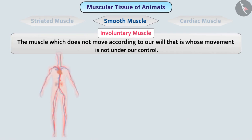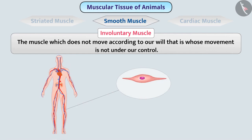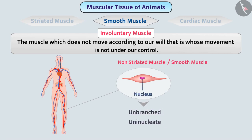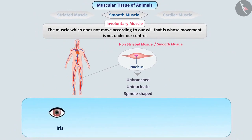When this muscle is observed with the help of a microscope, alternate bands of dark and light colors are not observed. Therefore, it is also called non-striated muscle. This muscle is smooth, so it is also called smooth muscle. Cells of this muscle are long, unbranched, and uninucleate, with pointed terminal ends — i.e., spindle-shaped. This muscle is also present in the iris of the eye, bronchi of the lung, and ureter.